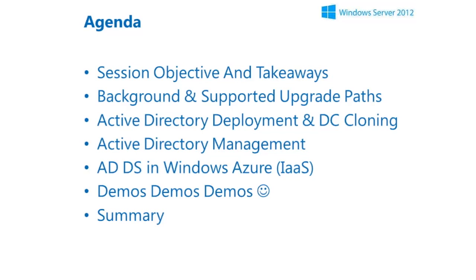We'll discuss deployment methodologies — how to deploy AD. Many of you are familiar with DC promo used in 2003, 2008, and 2008 R2. The best practice was to open your server and type DCPromo on the command line, then follow the wizard to set up a new forest or domain in an existing forest. Then I'd like to talk about DC cloning — what we've done so you can run Active Directory in a virtualized environment, be it Hyper-V, VMware, or whatever hypervisor you're planning.